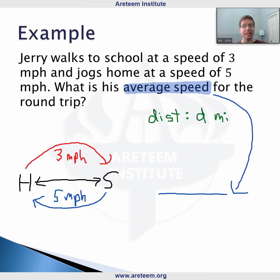Well, total distance is pretty easy. He's walking d miles to school and d miles back from school back home. So we basically have d plus d for the total distance in this case.